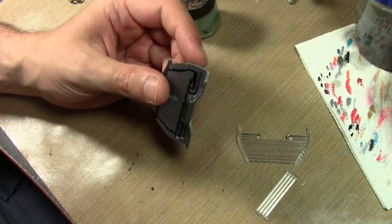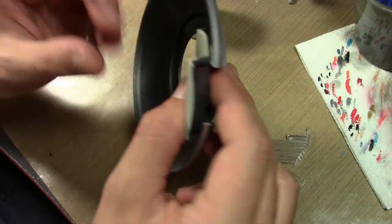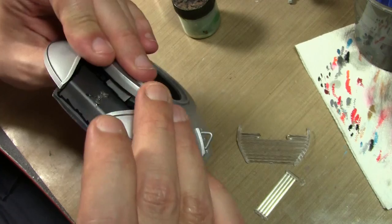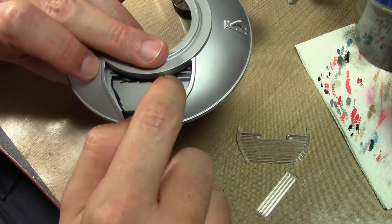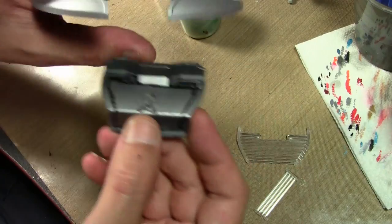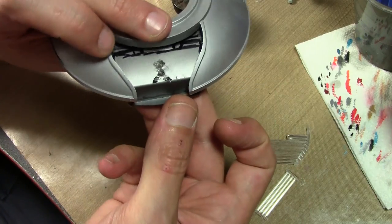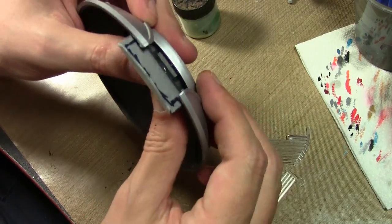So instead I'm just going to cut off this whole section entirely and then build a box underneath and then we'll go over how we're doing the lights there.